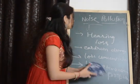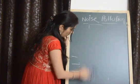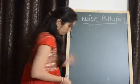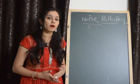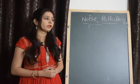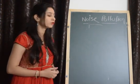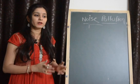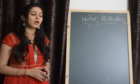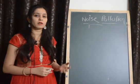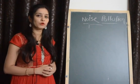What measures should we take to control noise pollution? We can use silencers and soft horns in automobiles. Plants should be planted because plants absorb sound energy. Sound absorbers should be used to control noise pollution. Factories and industries should be located far away from cities.